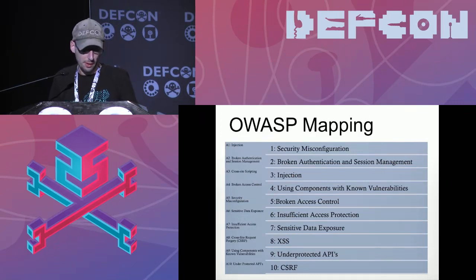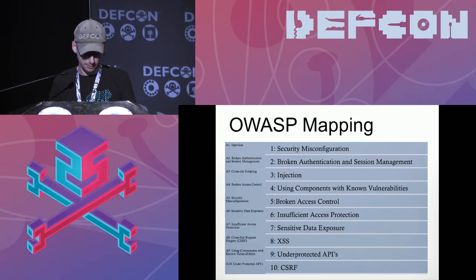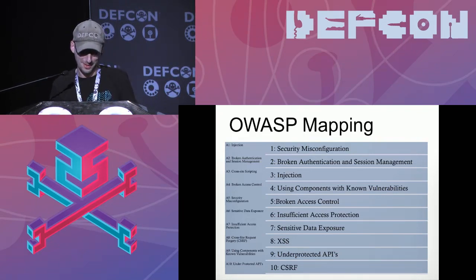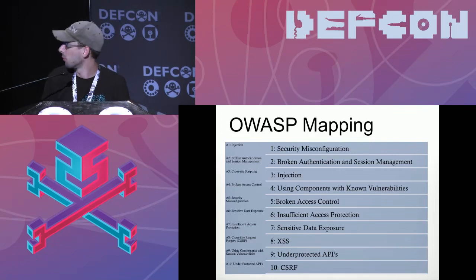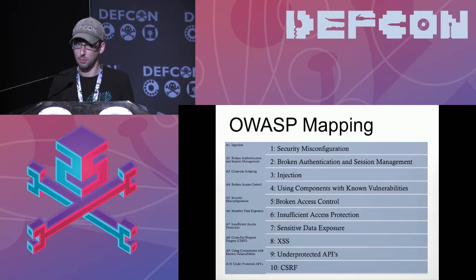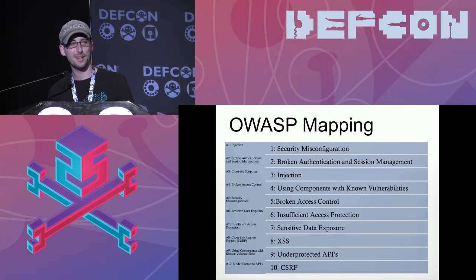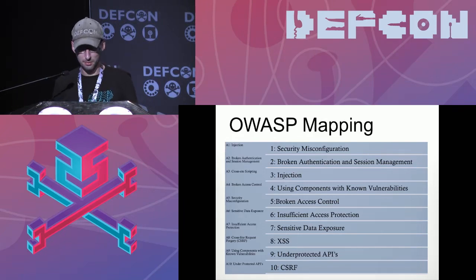This is what the OWASP mapping would look like reordered for phone systems, with misconfiguration probably being the top issue. There's really no established evidence or research into this ranking — it's my opinion, and I'd love to debate it. The VoIP Security Alliance is kind of dead at this point — they were doing good work before but haven't done anything in years.